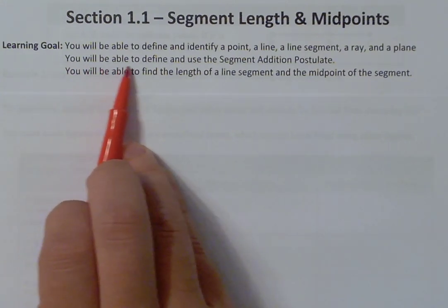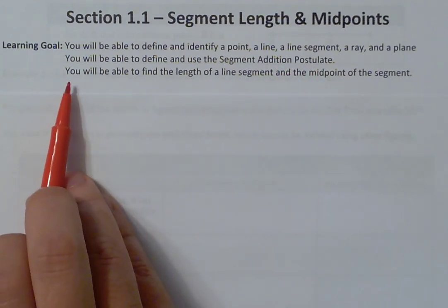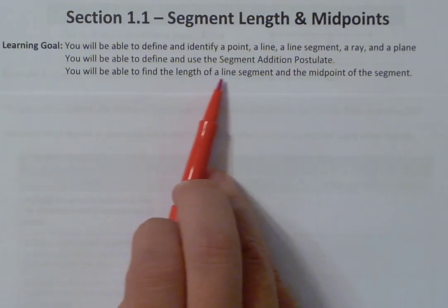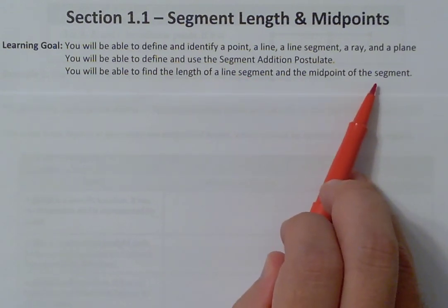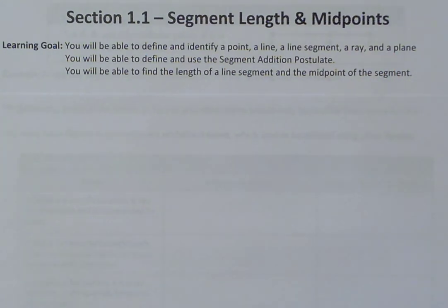Next, you will be able to define and use the segment addition postulate. And then lastly, you will be able to find the length of a line segment and the midpoint of the segment. So we're going to talk about the segment addition postulate, the midpoint formula, and the distance formula, and go through and apply those to these figures. Hopefully by the end of this lesson and video, you will feel fairly comfortable with those three learning goals.